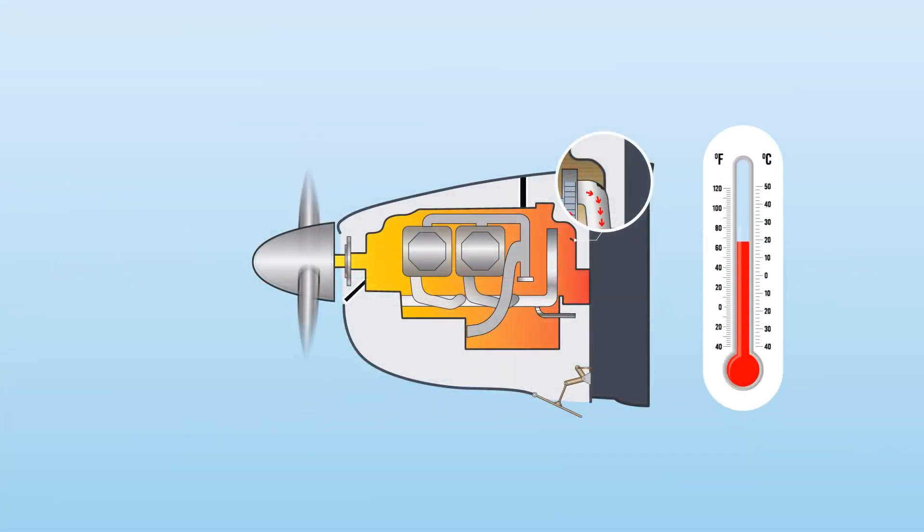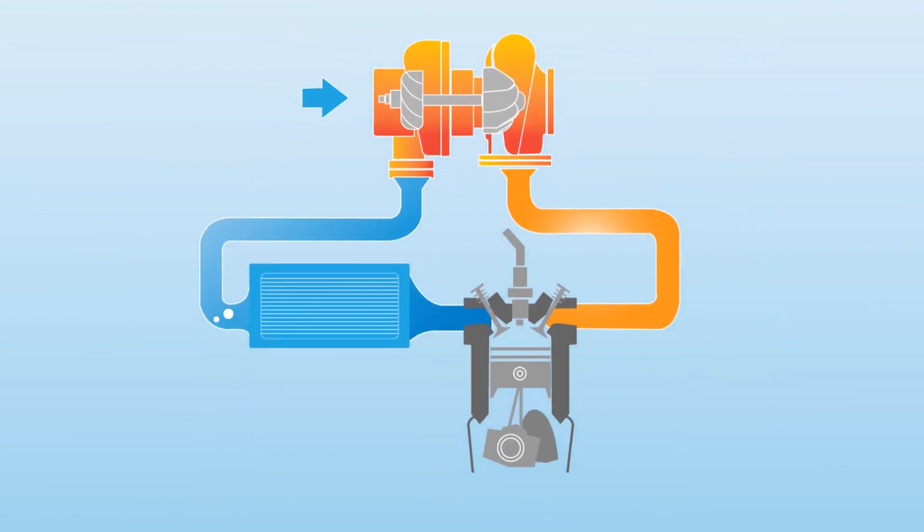Because the temperature of a gas rises when it's compressed, turbocharging causes the temperature of the induction air to increase. To reduce this temperature and lower the risk of detonation, turbocharged engines use an intercooler. The intercooler is a small heat exchanger that uses outside air to cool the hot compressed air before it enters the engine.